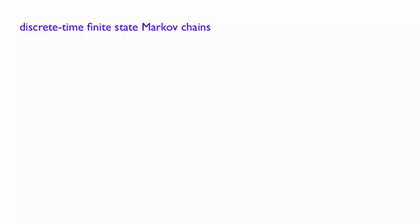Let us now abstract from our previous example and provide a general definition of what a discrete time, finite state, Markov chain is.